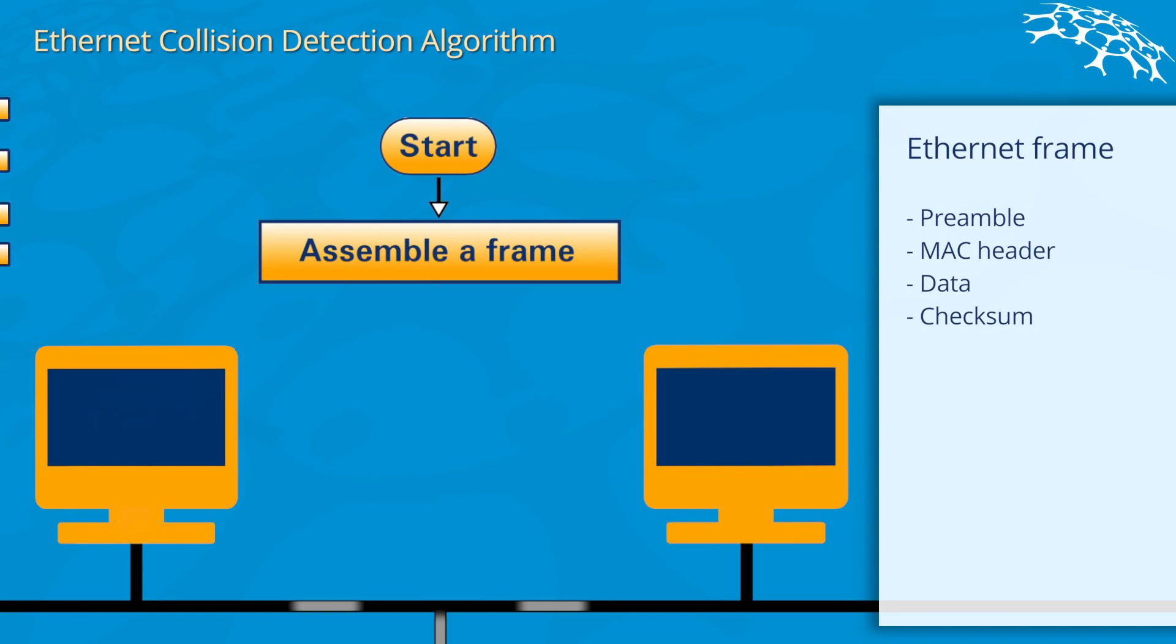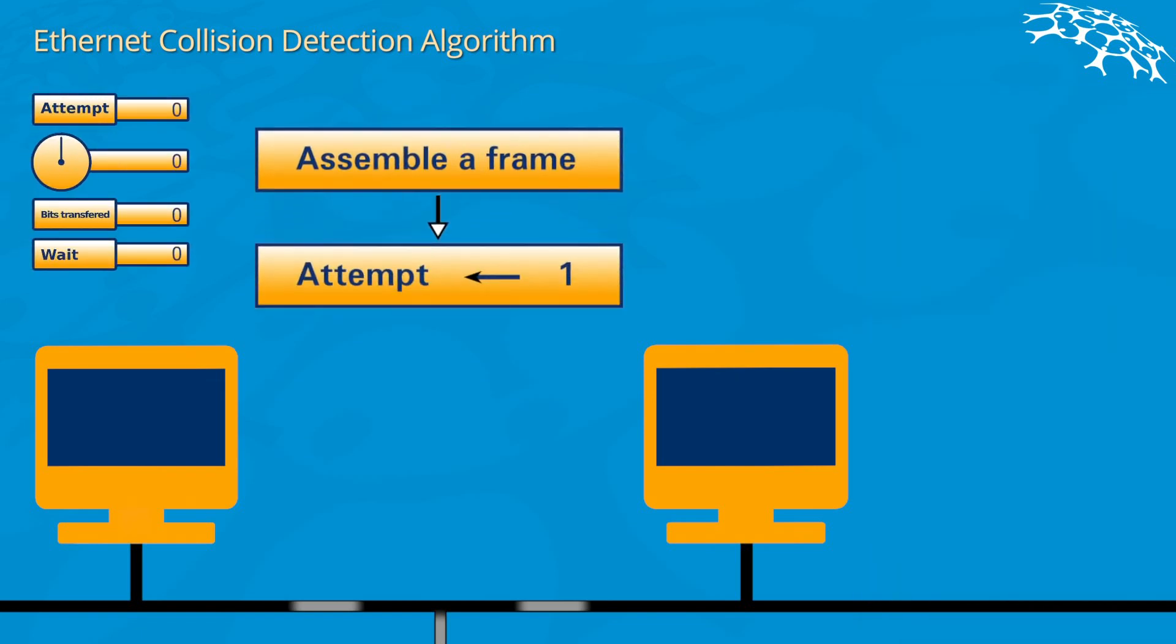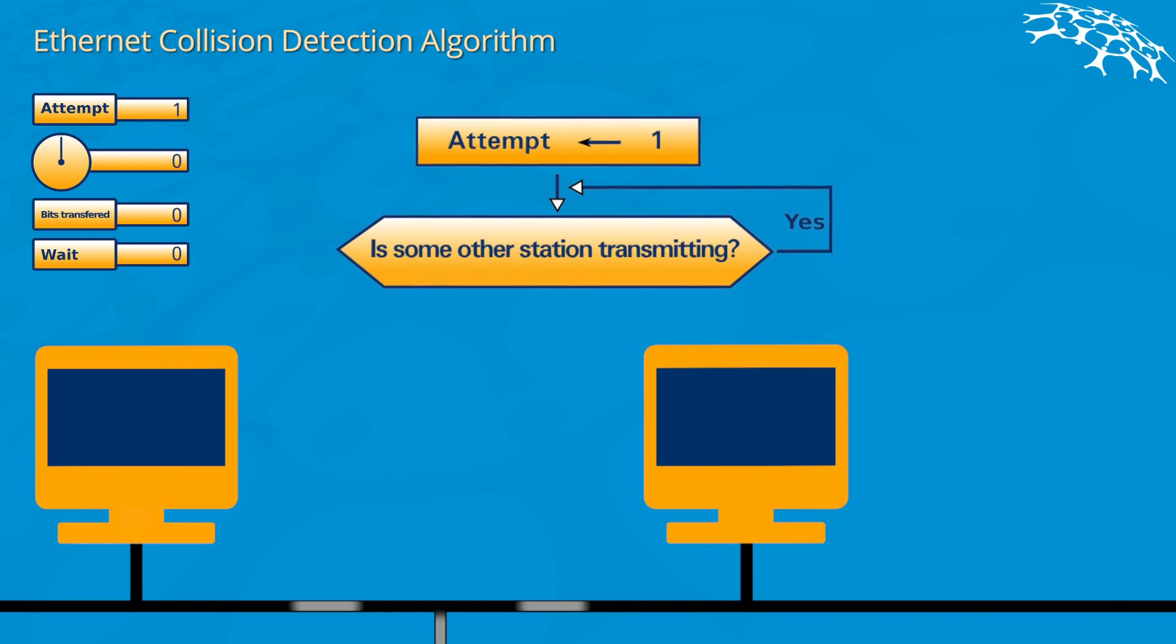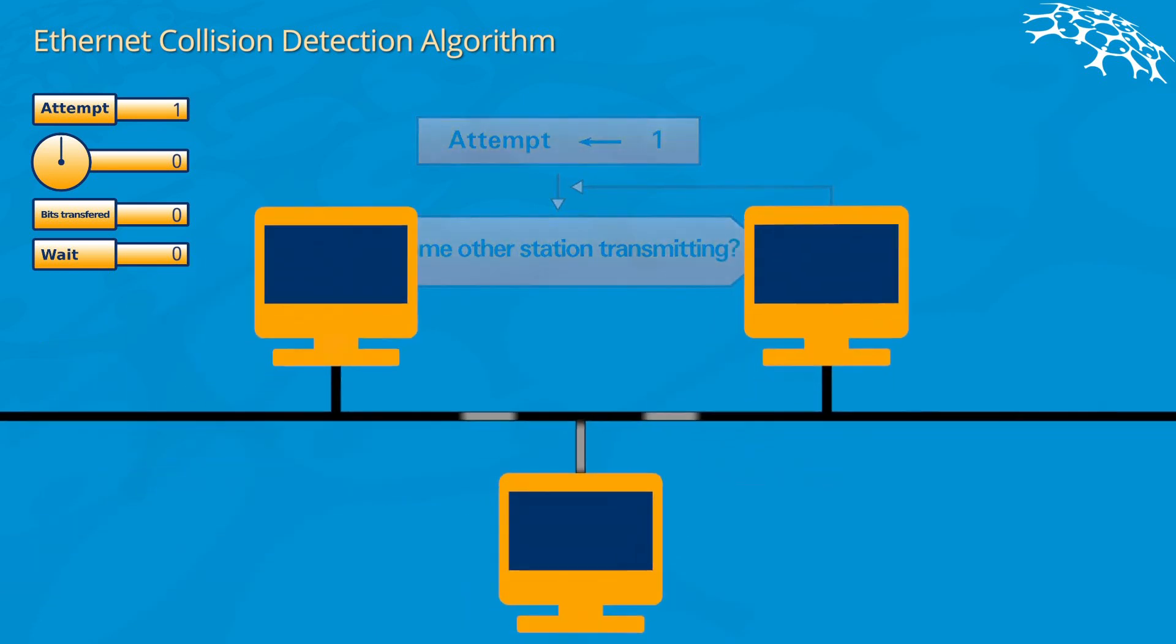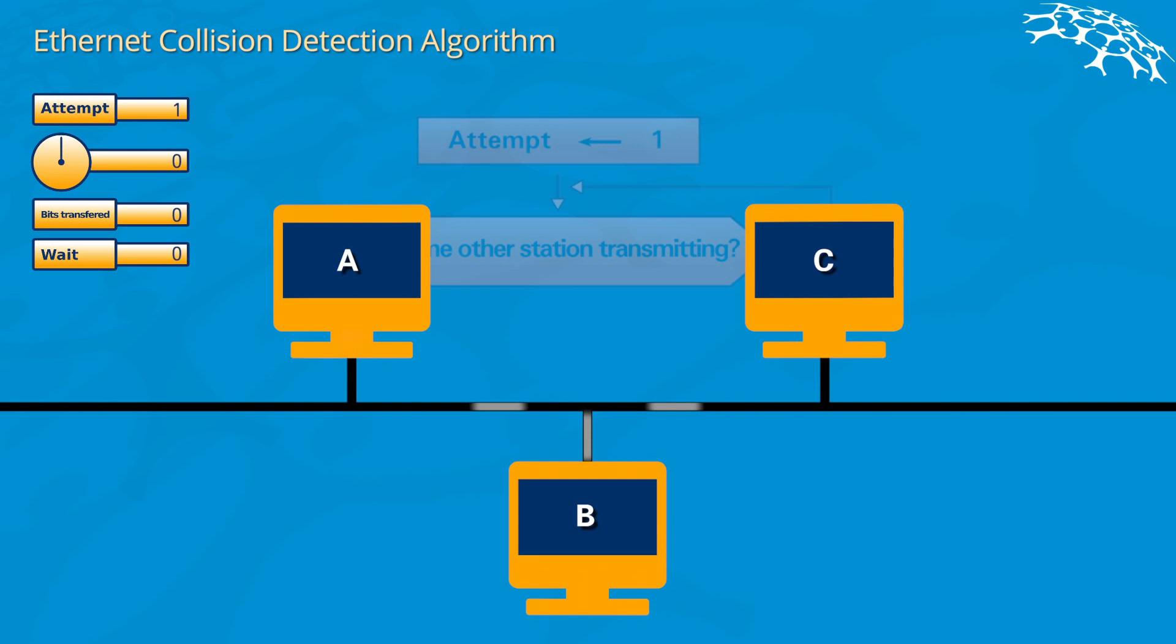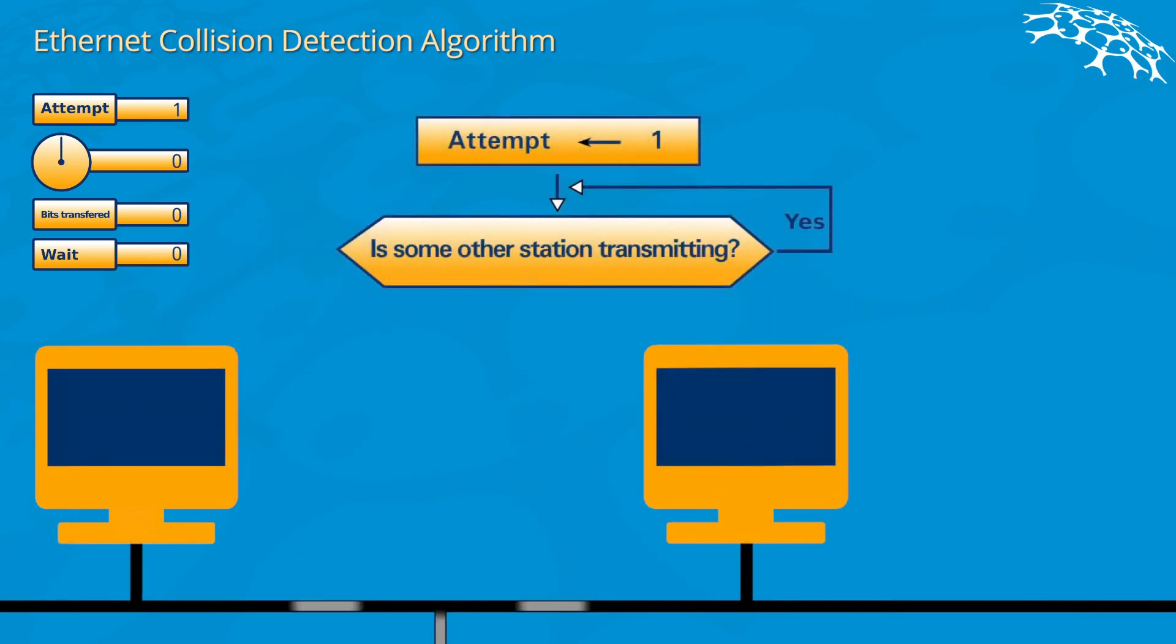We have several counters. The first one is the attempt counter, which is always set to one. The first thing we do is listen on the cable - is some other host or station transmitting data right now? I want to refer to our setting here: even though computer B already tries to transmit data, the wave hasn't traveled to our computer yet so we cannot see that the data is there. If the answer would be yes, we would wait for a clock cycle and ask again.